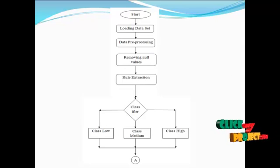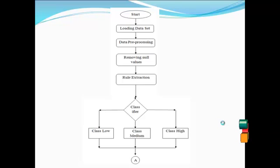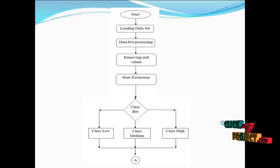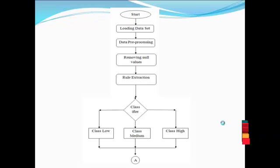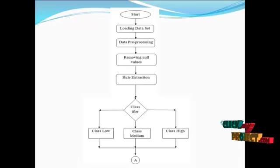Let's see the flow of the process. First, the data will be loaded. By giving the data set we do data preprocessing — data preprocessing means removing the null values. Then rule abstraction, which means classification. By the classifier, we use low, medium, and high classes. In this process we use the medium class and the high class to predict the data from the data preprocessing.